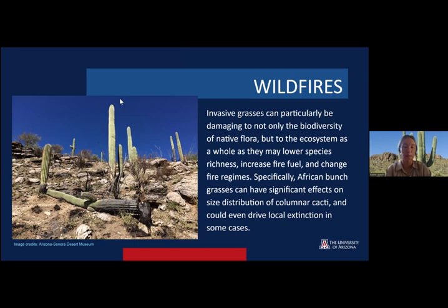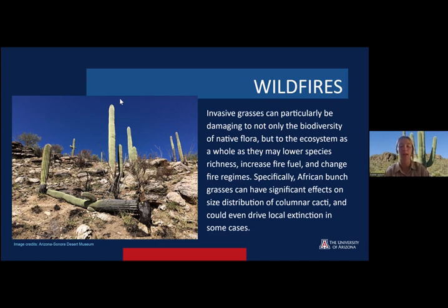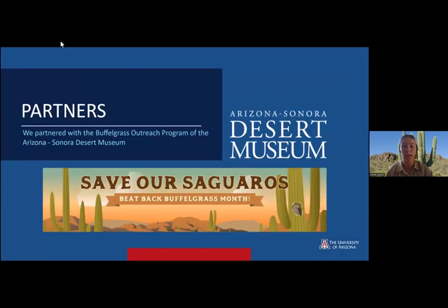This is a problem because invasive grasses can be damaging to not only the biodiversity of native flora by outcompeting native species, but to the ecosystem as a whole, as they may lower species richness. There's an increase in fire fuel and a change in fire regimes as a result of those mass amounts of fire fuel from the grass. Specifically, African bunchgrass can have significant effects on size distributions of cactus, such as saguaro cactus, and could even drive local extinction in some cases. For our project, we partnered with the buffelgrass outreach program Save Our Saguaros from the Arizona Sonoran Desert Museum.